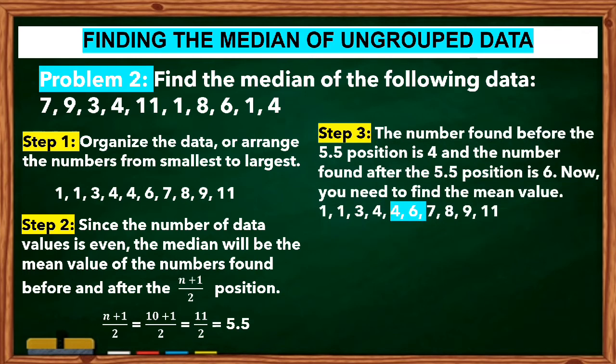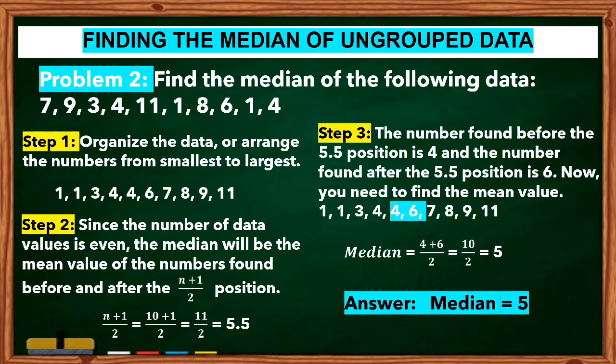Step 3: The number found before the 5.5 position is 4 and the number found after the 5.5 position is 6. Now, find the mean value by adding the two numbers: (4 + 6) / 2. So, the median is 5.